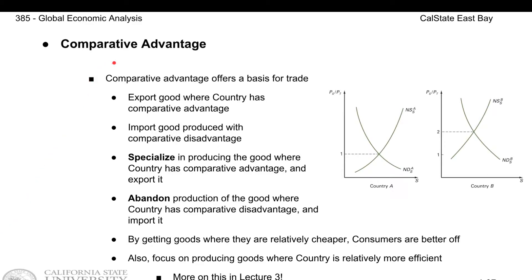Comparative advantage basically means producing a good at a relatively cheaper cost than the other country. For example, the U.S. might be more efficient in making iPhones than Norway, in which case we would say the U.S. has comparative advantage in making iPhones.